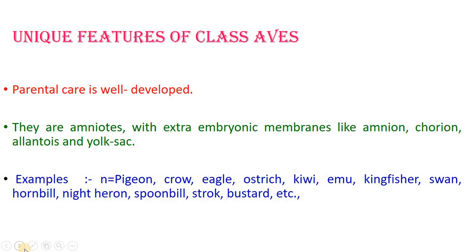Birds are amniotes with extraembryonic membranes — amnion, chorion, allantois, and yolk sac. Birds lay terrestrial eggs, and like reptiles and mammals, they possess these extraembryonic membranes. Examples of birds include pigeon, crow, eagle, ostrich, kiwi, kingfisher, swan, hornbill, duck, night heron, spoonbill, stork, and bustard — many types of birds exist.